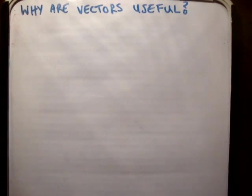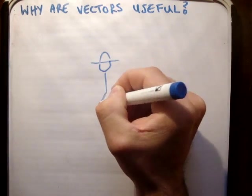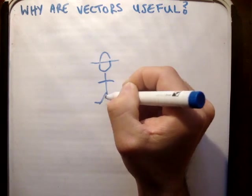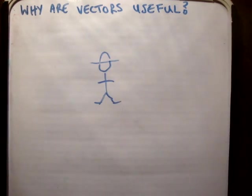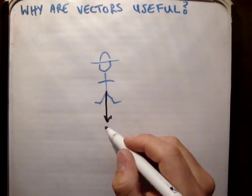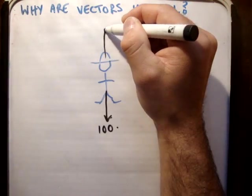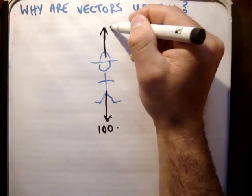I'm going to give a quick example. If I had a man, and this man has a weight - say his weight is in this direction and it is 100 units. And say there is another force going this direction, also 100 units.